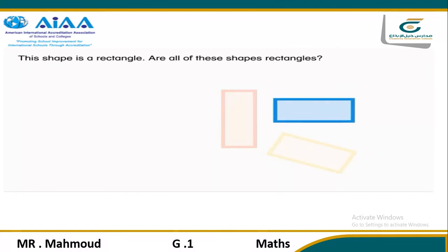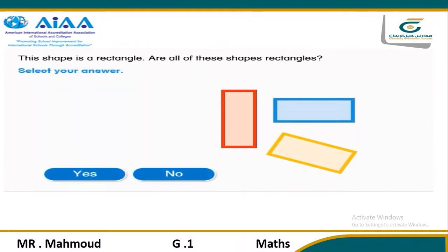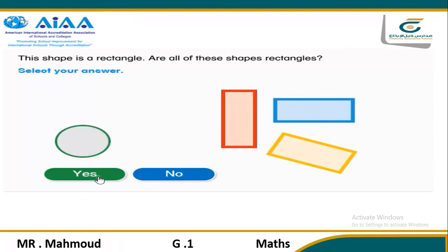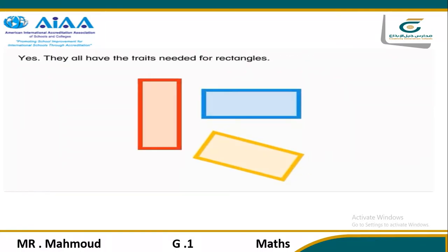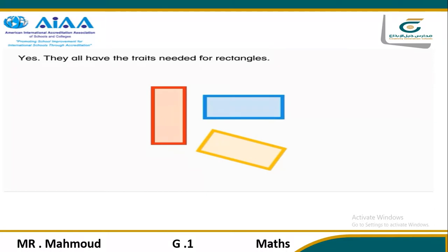This shape is a rectangle. Are all of these shapes rectangles? A rectangle is a closed shape with four sides and four vertices. Is it a rectangle? Is it a rectangle? Is it a rectangle? The answer is yes — they all are rectangles. They all have the traits needed for rectangles.